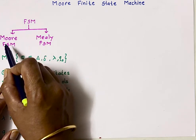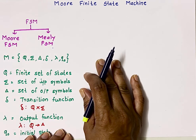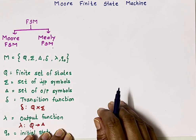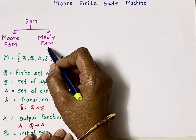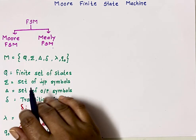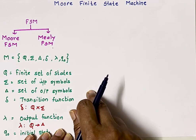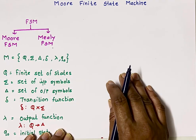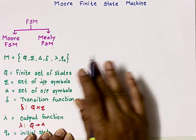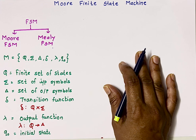Finite state machines are divided into two types: Moore FSM and Mealy FSM. In case of Moore FSM, output depends on present state, and in Mealy FSM, output depends on present state as well as present input. It means in Mealy FSM, output depends on what the present output is as well as what external input is applied. Whereas in Moore FSM, next output depends on present state only — it doesn't depend on external input.